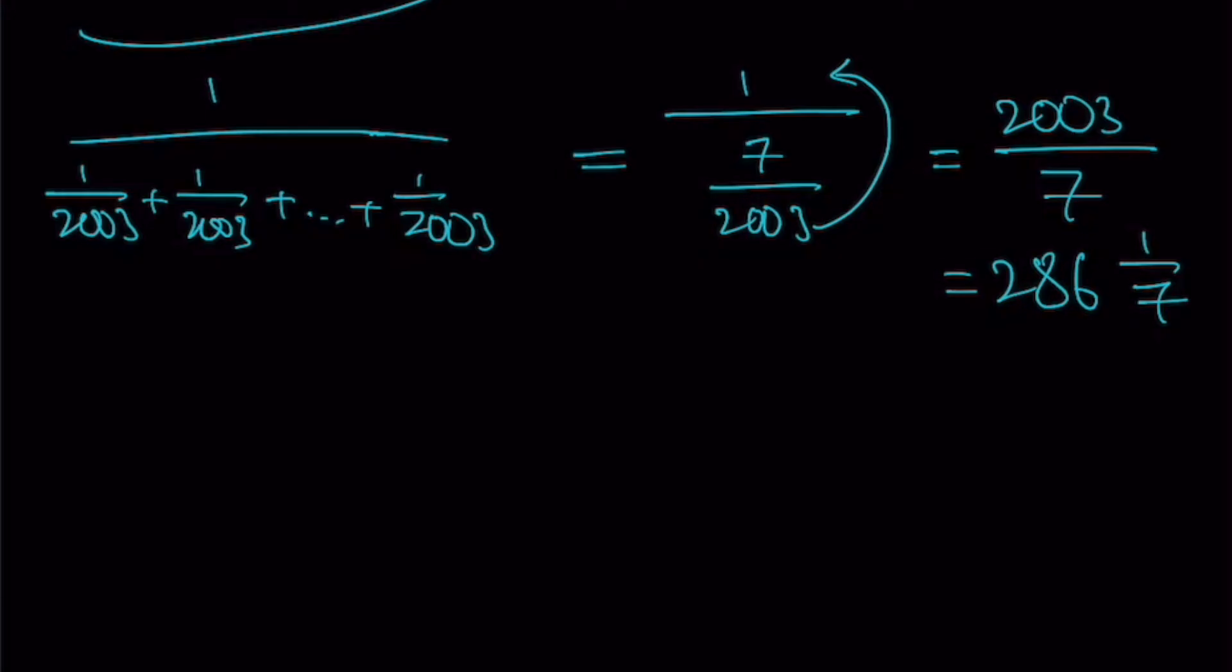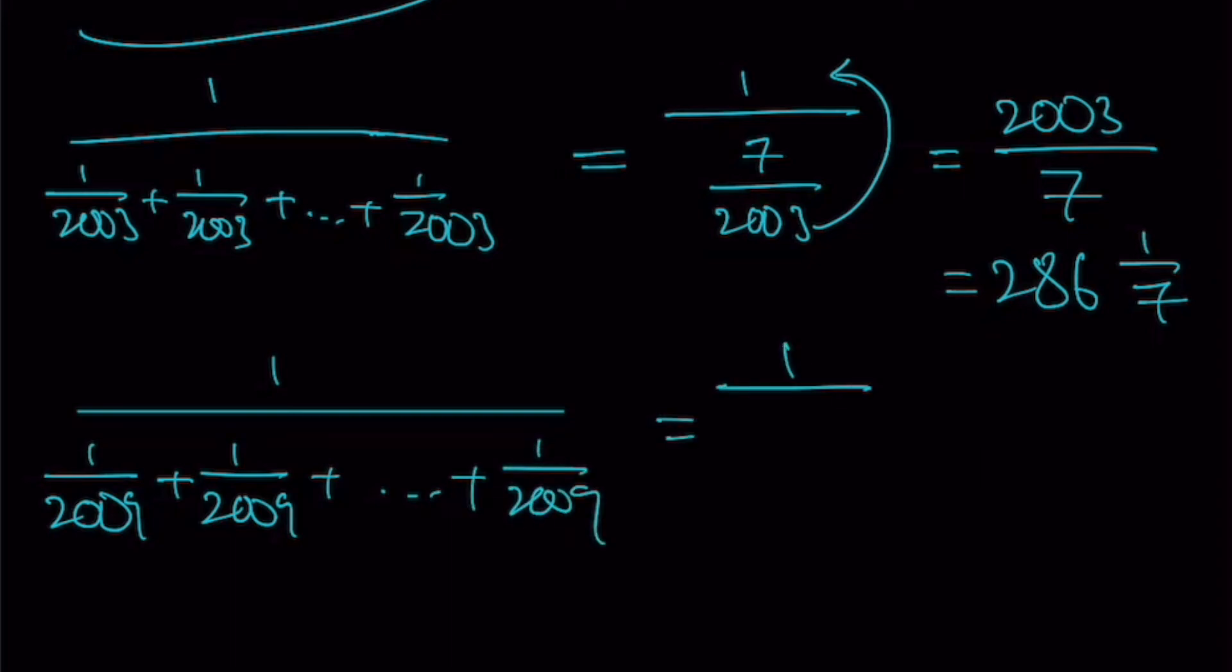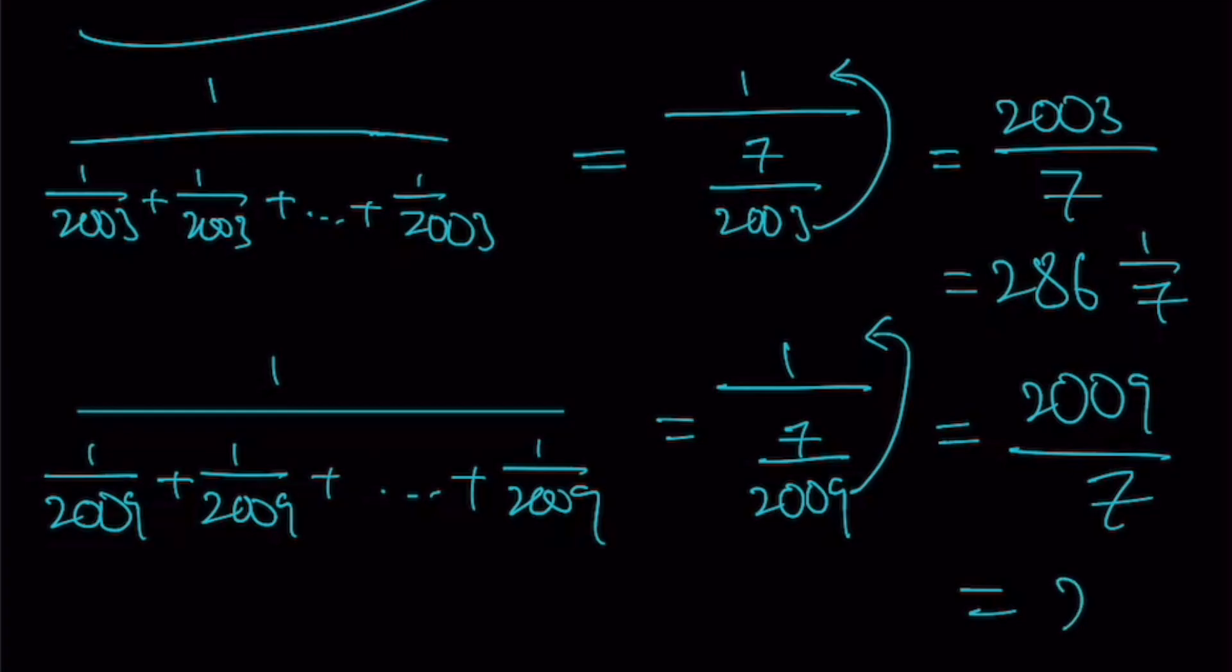What's the other end? The other end is 2009. So instead of writing 2003, let's change everything to 2009. So likewise, 1 over 2009. Add it 7 times. You'll get 1 over 7 over 2009. Likewise, we flip the bottom fraction up. And you'll get 2009 over 7. And it gives you a very nice number 287 with no fractions or decimal.